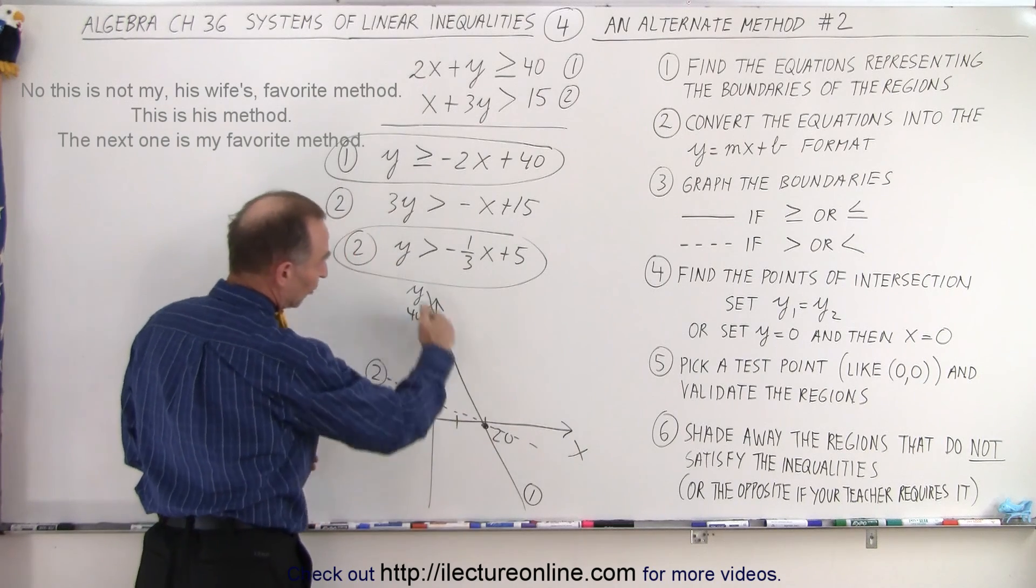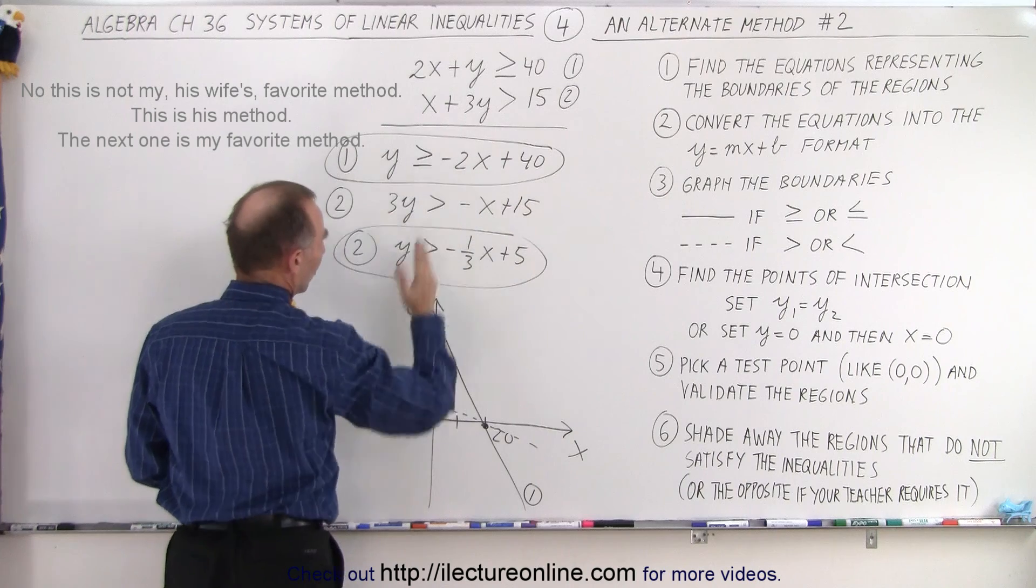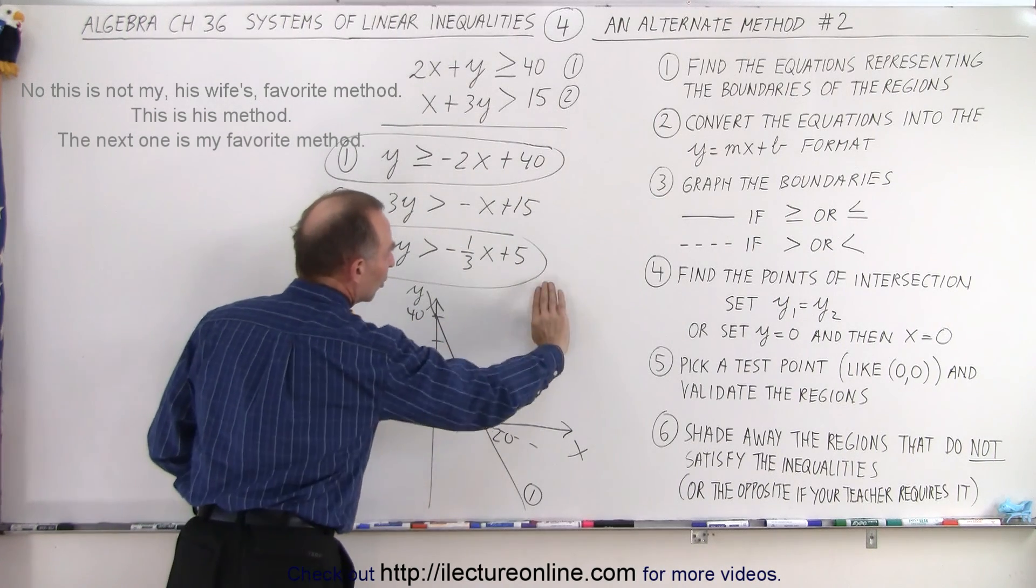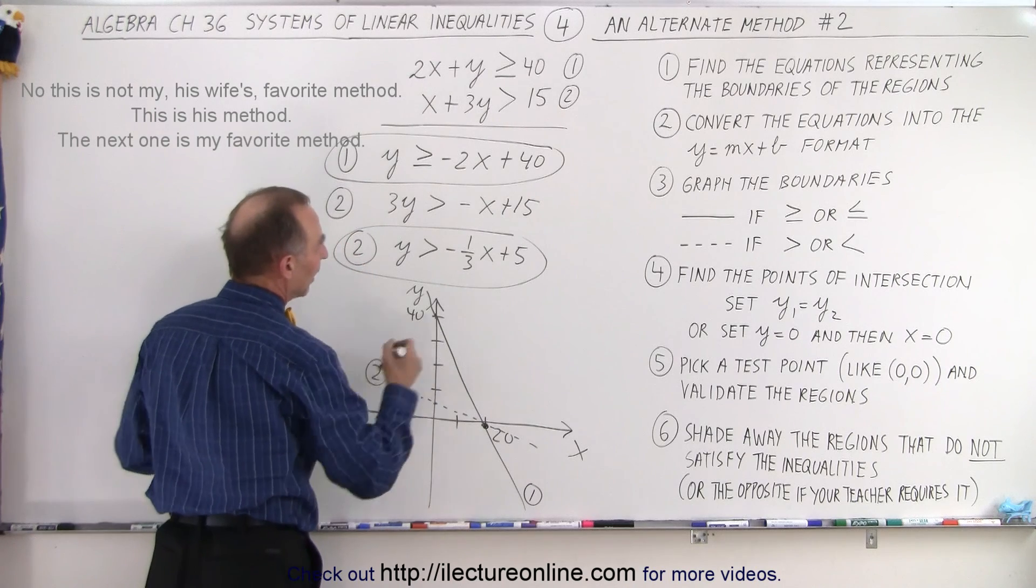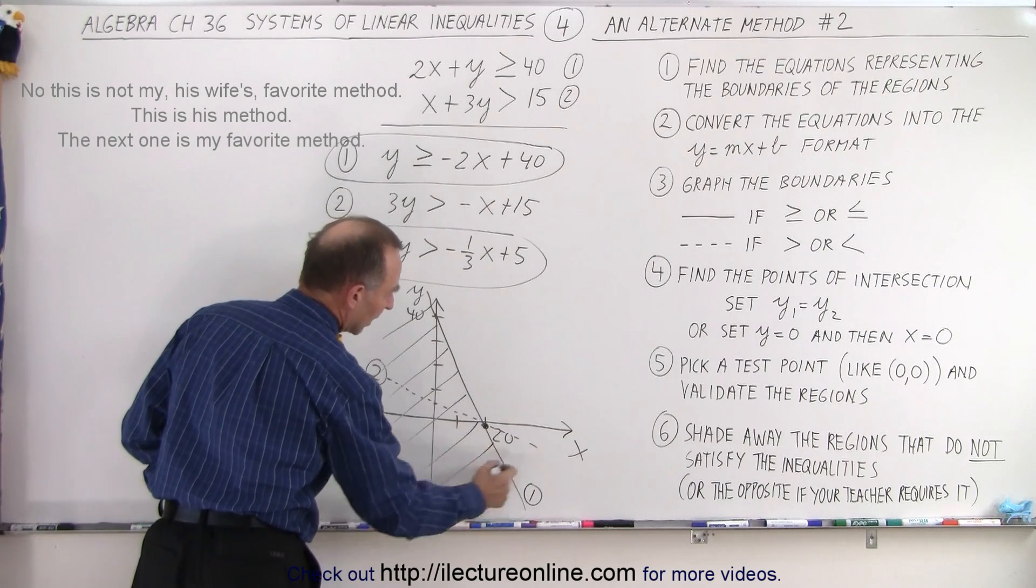So she assumes that since we have a line like this, that this region represents a larger value for y. This region represents a smaller value for y. That this is the correct region and this is not. And so we get rid of the incorrect region that's not belonging.